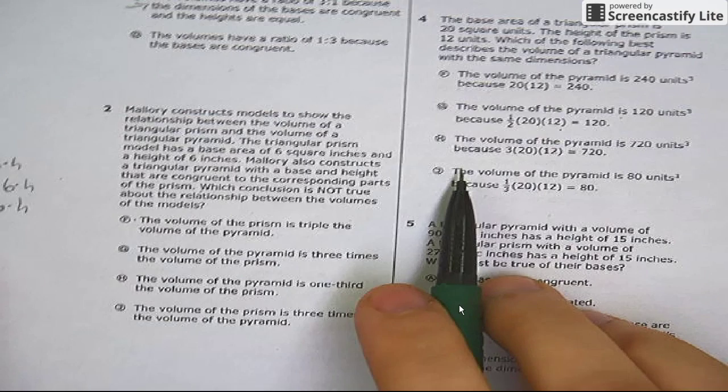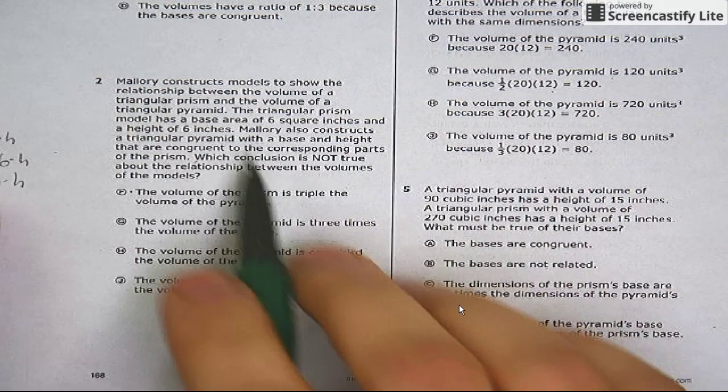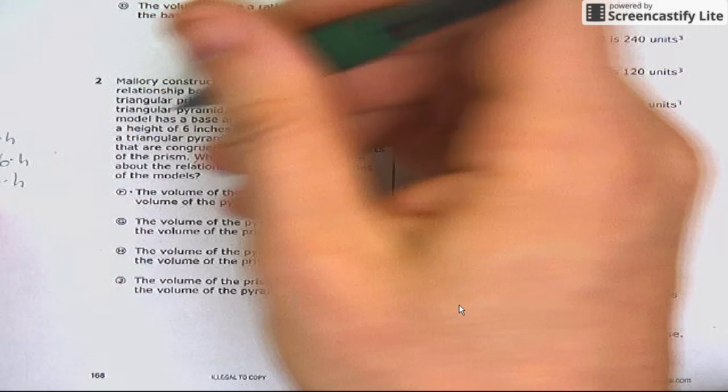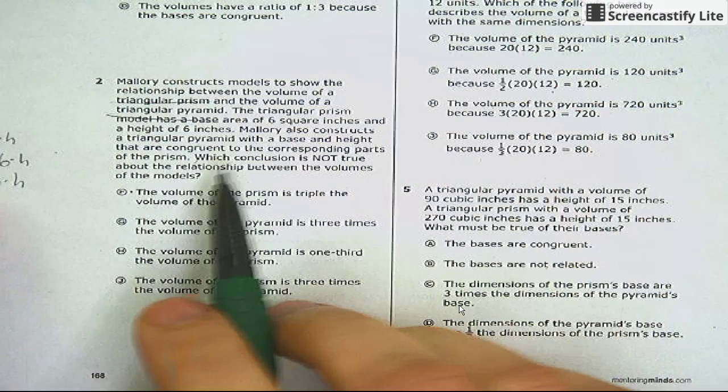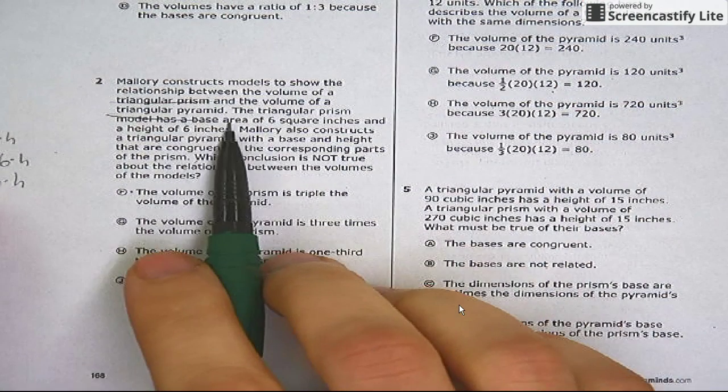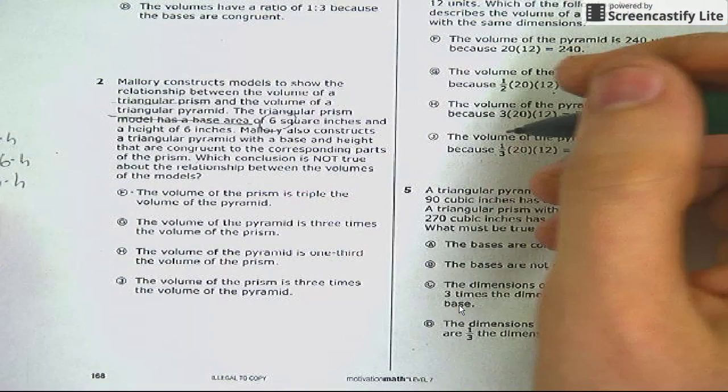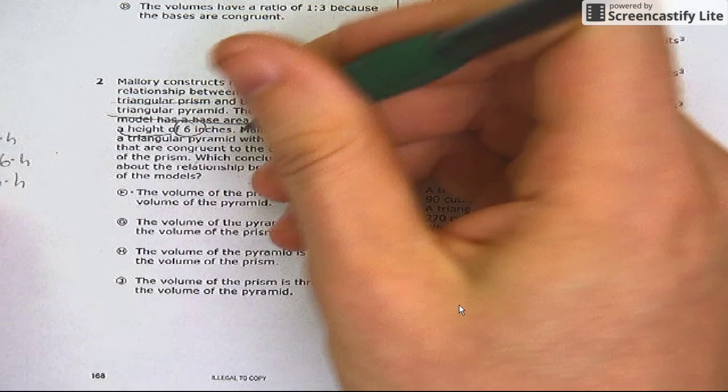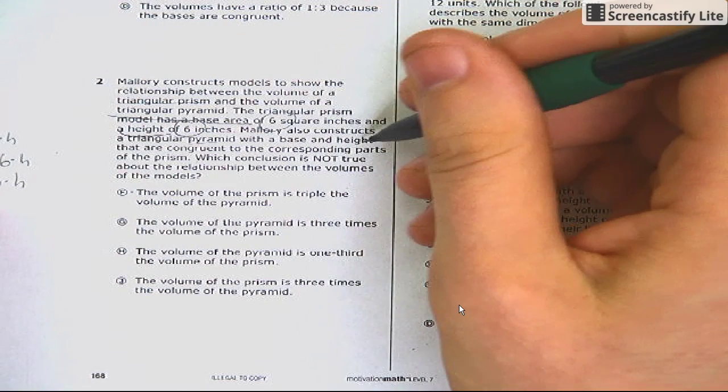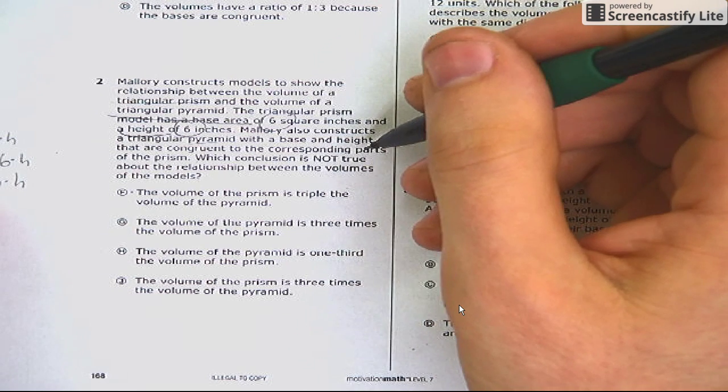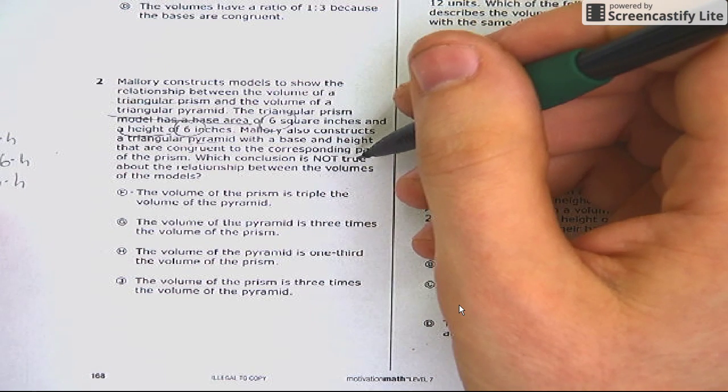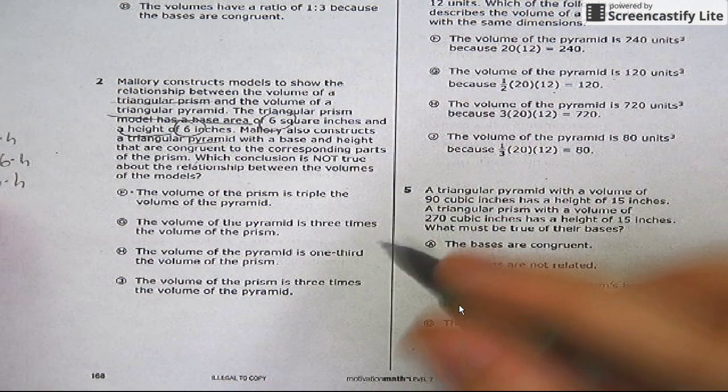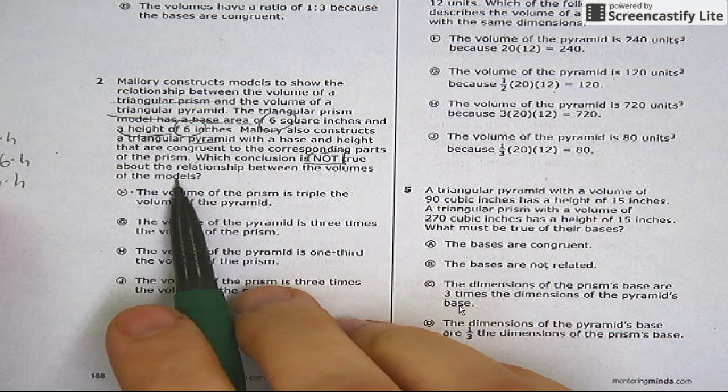Number two: Mallory constructs models to show the relationship between the volume of a triangular prism and the volume of a triangular pyramid. Very good, A+. The triangular prism models have base area of six square inches and the height of six inches. Mallory also constructs a triangular pyramid with a base and a height that are congruent to the corresponding parts of the prism. So again, these are two shapes that are exactly the same size—only one's a prism and one's a pyramid.